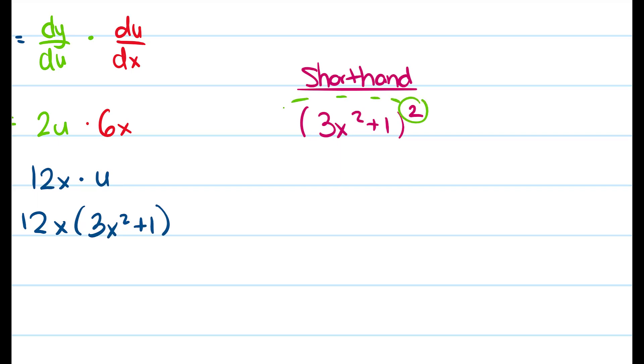So the power comes down to the front and I get 2 times 3x squared plus 1 and then because of the power rule you subtract 1 so I'm left with a 1 times the derivative of the inside piece. So I get 2 times 3x squared plus 1 times and the derivative of 3x squared plus 1 is 6x. And then after simplifying you see I get the same thing.